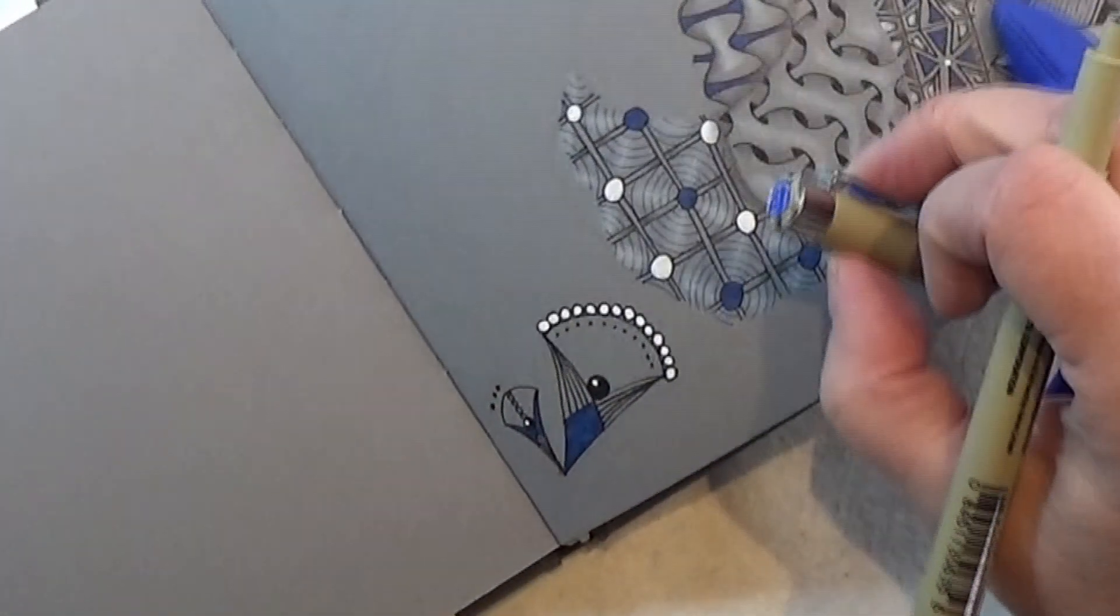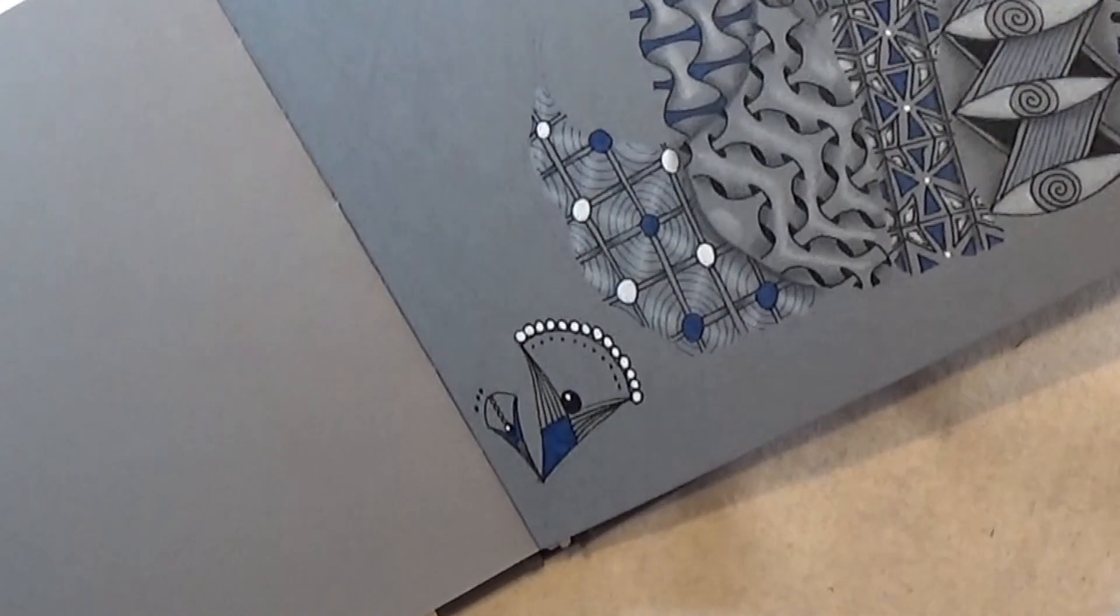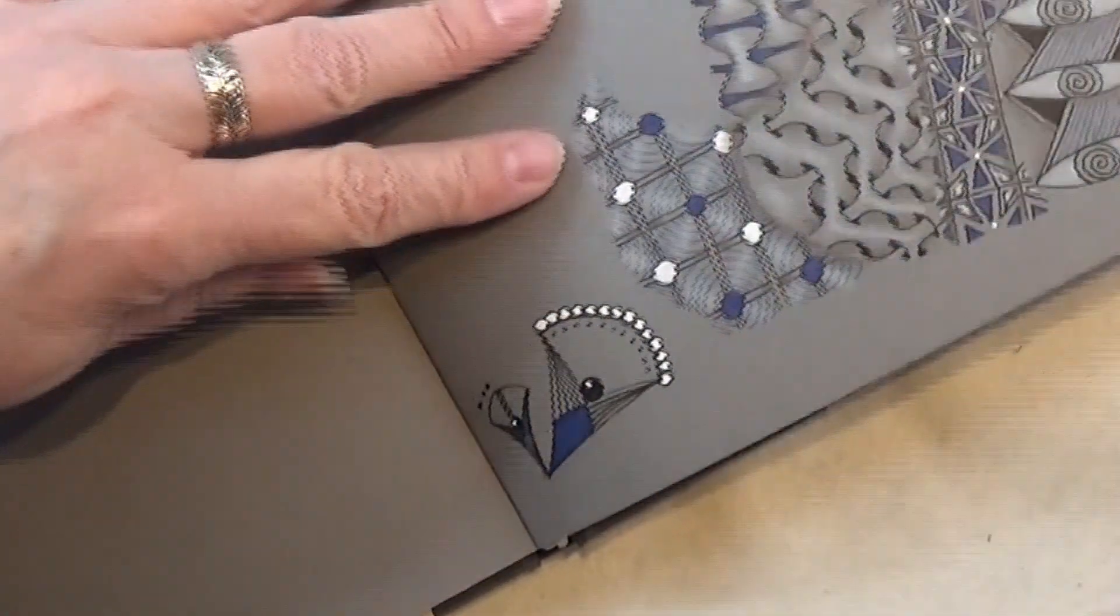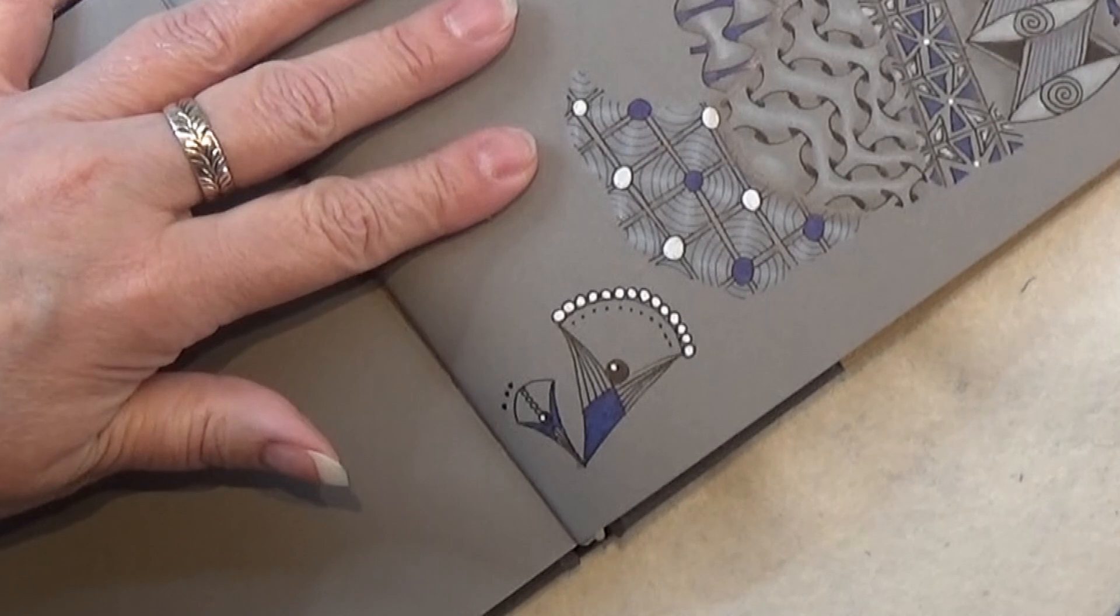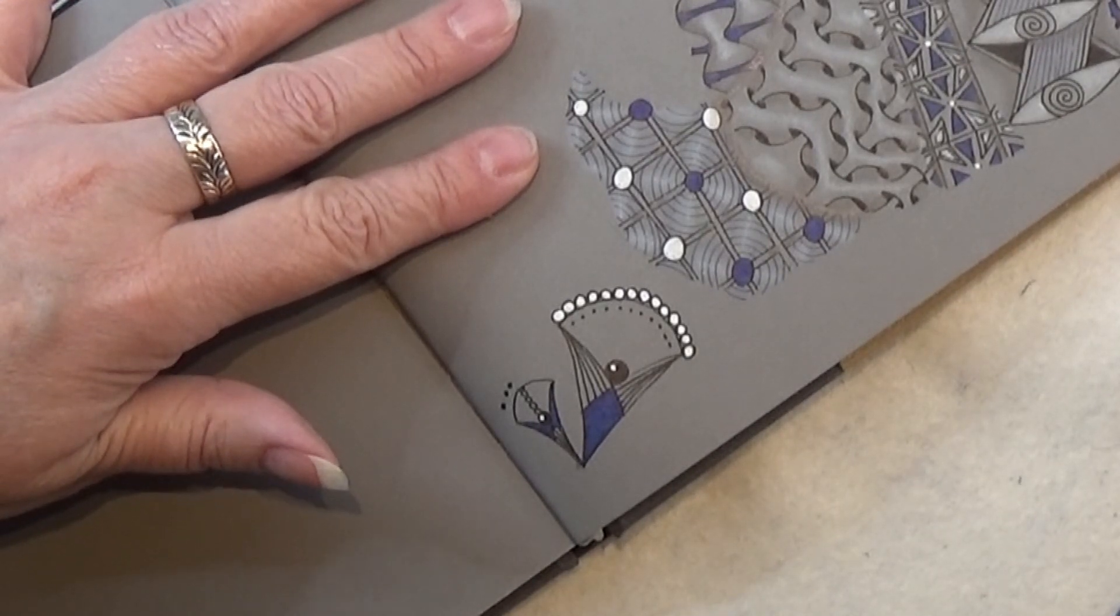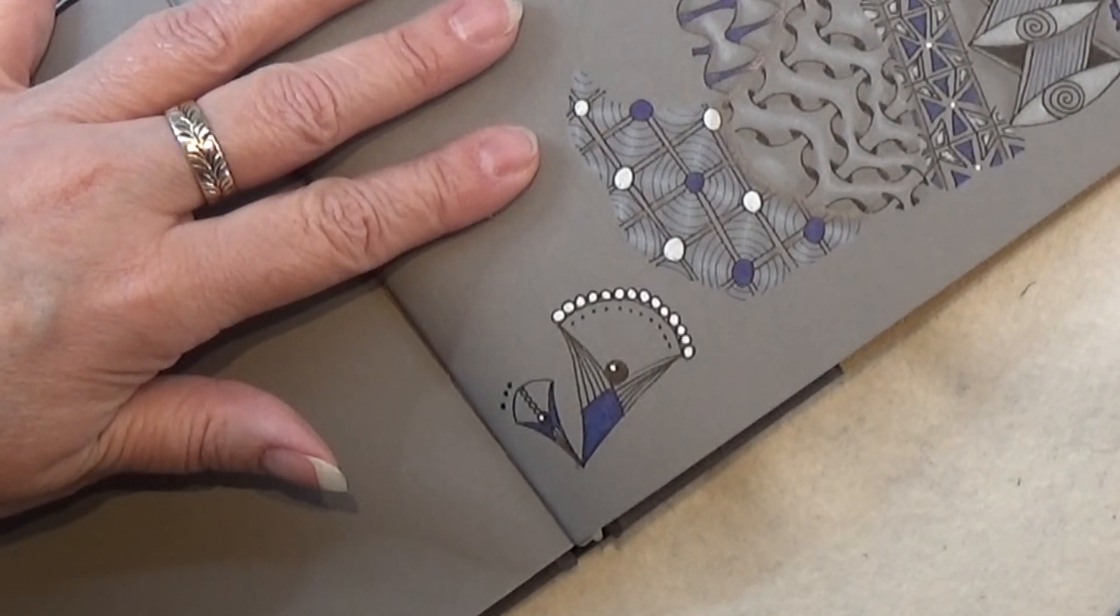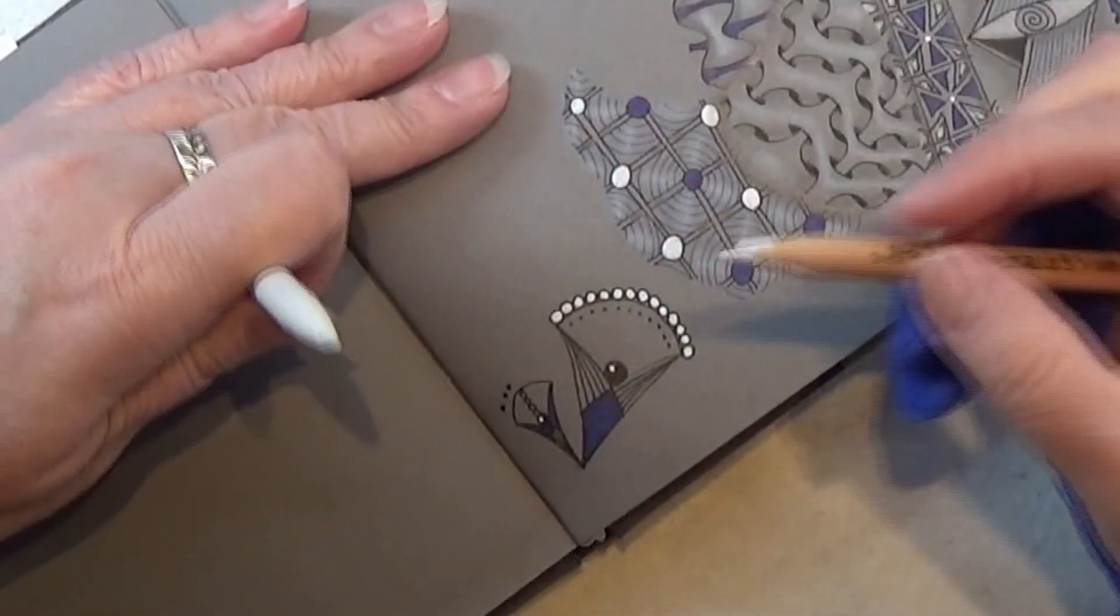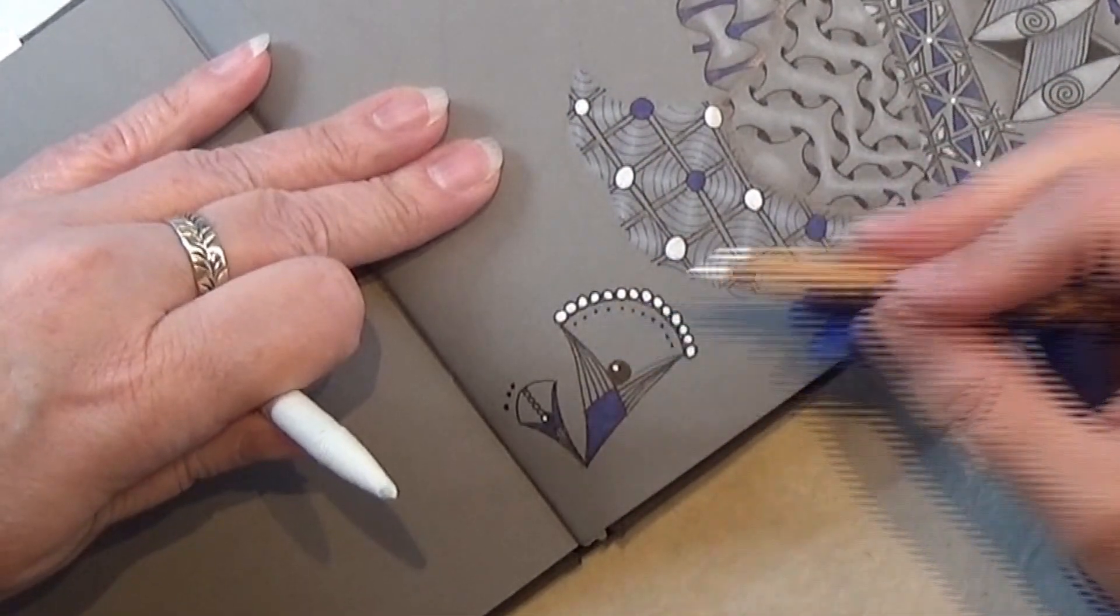There we go. You can actually make a border with this shape here. I am not showing you that right today, but you can try it out and maybe I will do that in a tile soon.